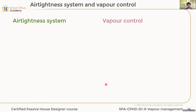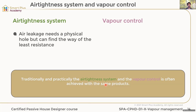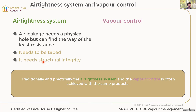An air tightness system doesn't mean vapor control. Air leakage needs a physical hole, but it finds the way of least resistance — that's what air does, it just finds the hole. It needs to be taped and needs structural integrity, because the pressure difference between inside and outside has an impact on that.